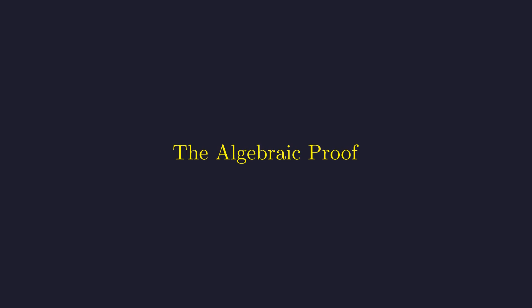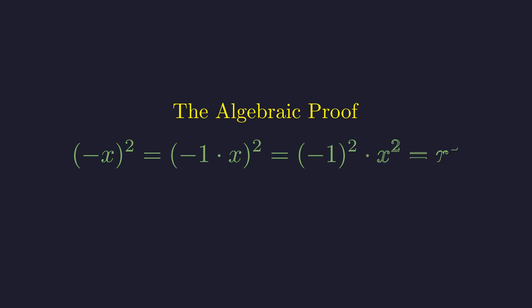If you want to see why these expressions are fundamentally different, let's look at this algebraically. When we have parentheses, the negative x becomes negative 1 times x. When we square this entire quantity, we get negative 1 squared times x squared, which simplifies to just x squared.